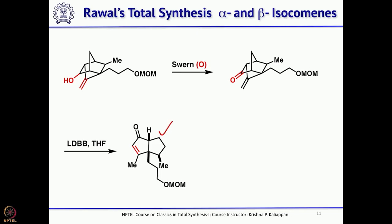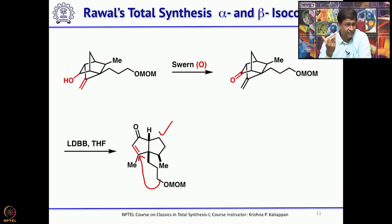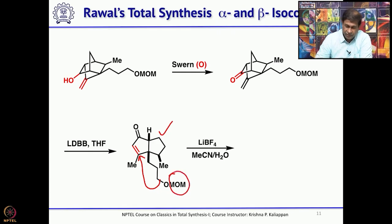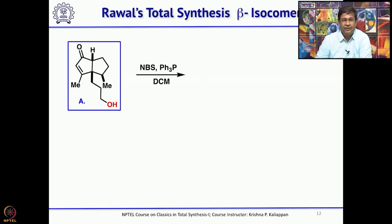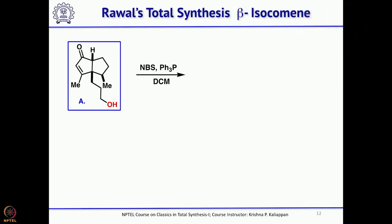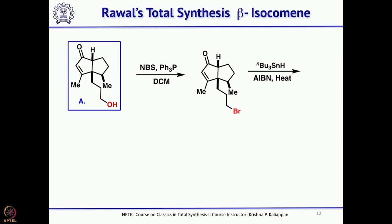Now you already have the dicyclopentanoid skeleton. What you need to do is cyclize to form the third ring, achieving the angular tricyclopentanoid core structure. For that, first you remove the MOM group using lithium tetrafluoroborate to give the alcohol. This alcohol is converted to the corresponding bromide by treating with NBS and triphenylphosphine, giving the primary bromide. Treatment with tributyltin hydride and AIBN generates the radical, which attacks in a 5-exo fashion to give the angular tricyclopentanoid.